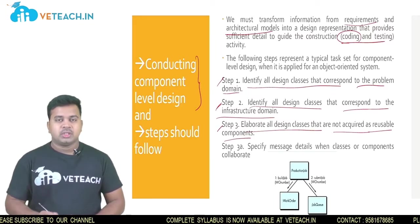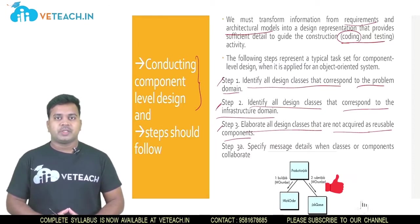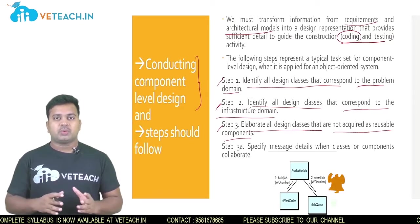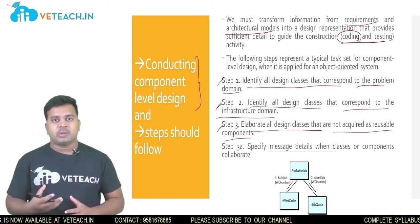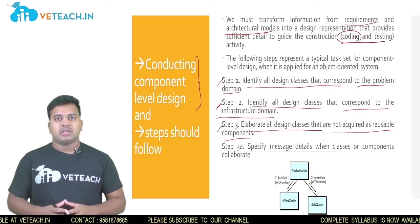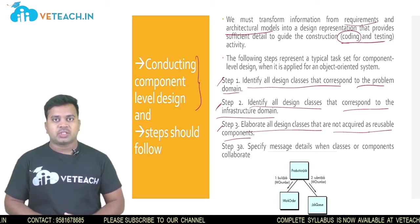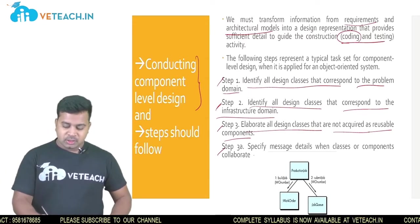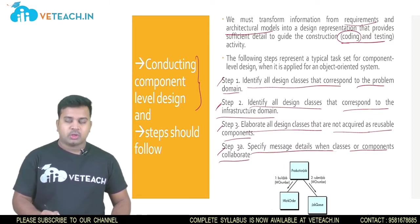In the third step you have to elaborate all design classes that are not acquired as reusable components. In the present software development landscape we focus on reuse — keeping in mind that a component or class may be used in the future. But some classes and components are not useful for future use, so you need to identify those in the third step.